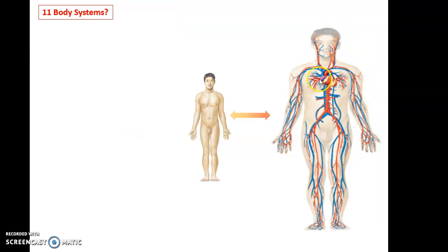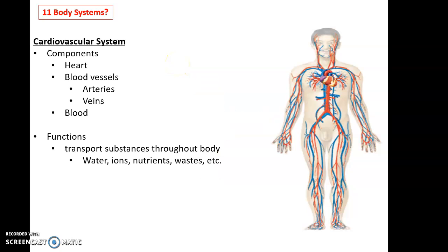Then we have this lovely system here called the cardiovascular system. The cardiovascular system includes the heart, the blood vessels, which can be broken down into arteries and veins, and of course the blood found within the blood vessels.